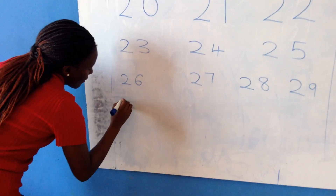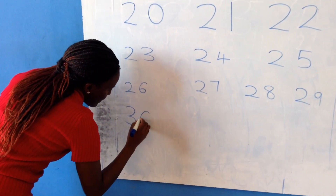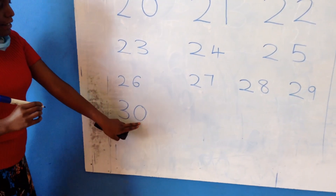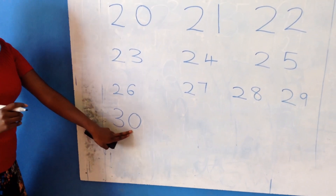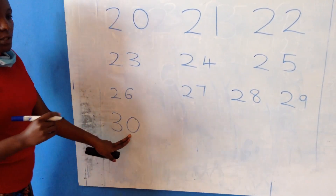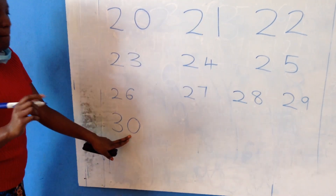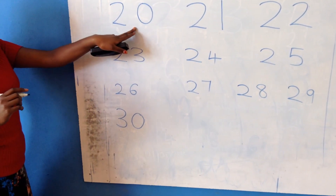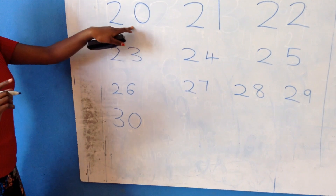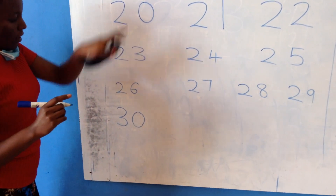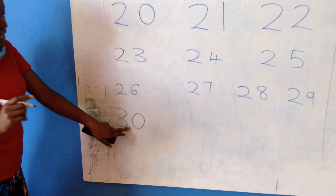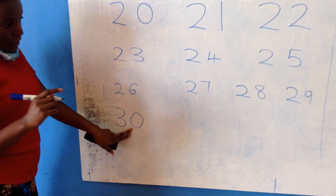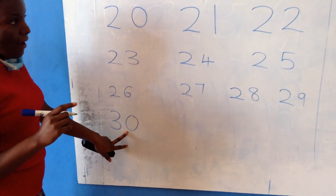Then, three and zero — three and zero is number thirty. Can you say number thirty? Number thirty. Which number is this? Number twenty. Which number is this? Three and zero — number thirty.